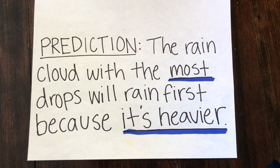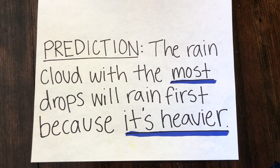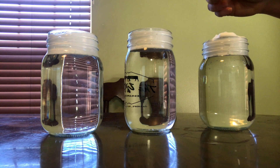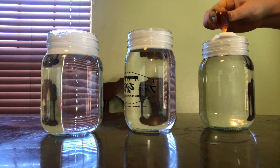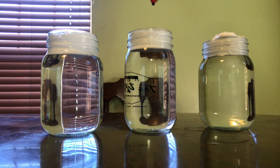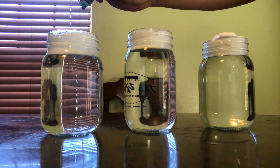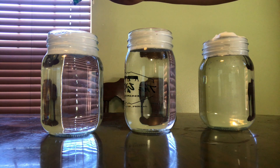Can you find the spots that I've underlined in blue? In these spaces, you should write your guesses as you craft your prediction. In jar one, I'm going to add five drops. In jar two, I'm going to add ten drops. In jar three, I'm going to add fifteen drops.